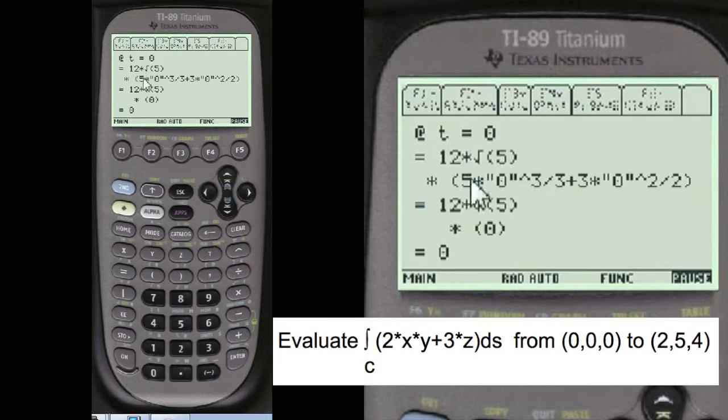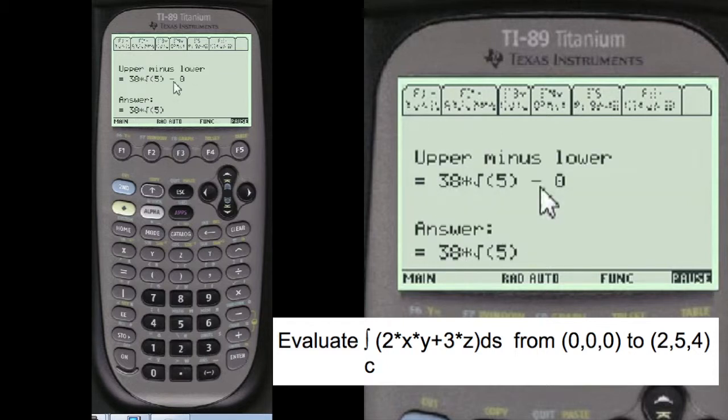And then at T equals 0, here's the replacements of T with all the 0's in it. And that, of course, equals 0. And we're going to take the upper minus the lower, which is 38 square root of 5 minus 0.